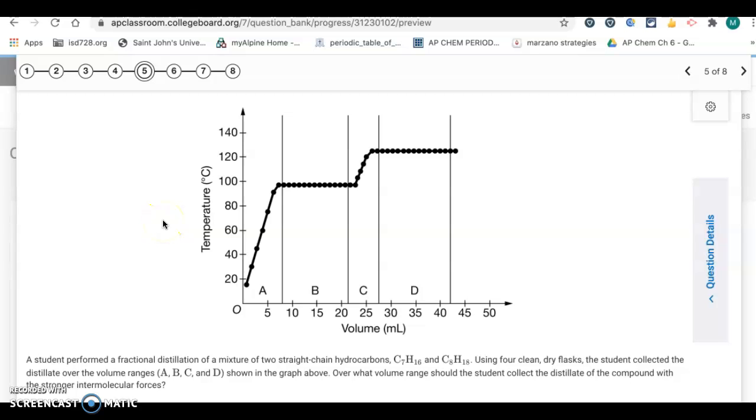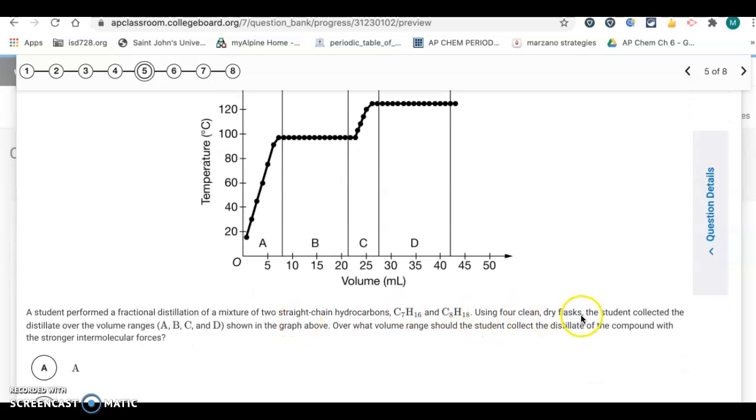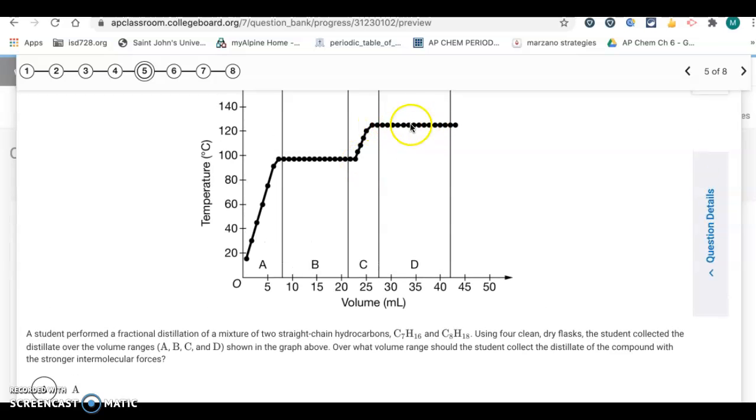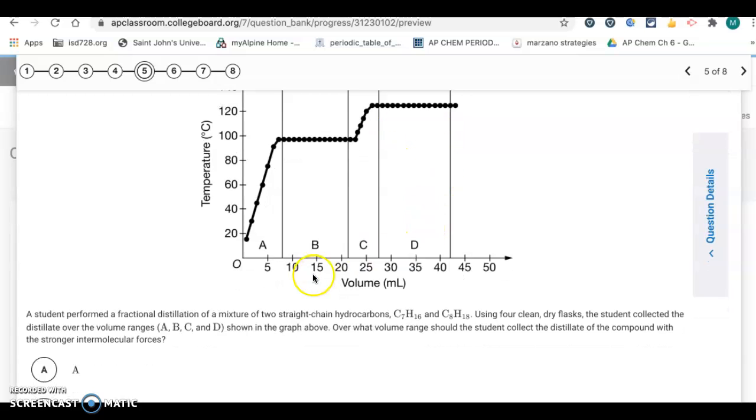Question number five. Now, here we're performing a fractional distillation. So, distillation separates these liquids based on their boiling point. So, we use 4 clean, dry flasks. The student collects the distillate over the volume ranges A, B, C, and D. Over what volume range should the student collect the distillate of the compound with the stronger intermolecular forces? So, this is the key right here. If there's stronger intermolecular forces, that means the boiling point will be higher. So, that means we want to look at the area that has the highest boiling point. So, that's going to be the D range right there. So, it's the letter D.